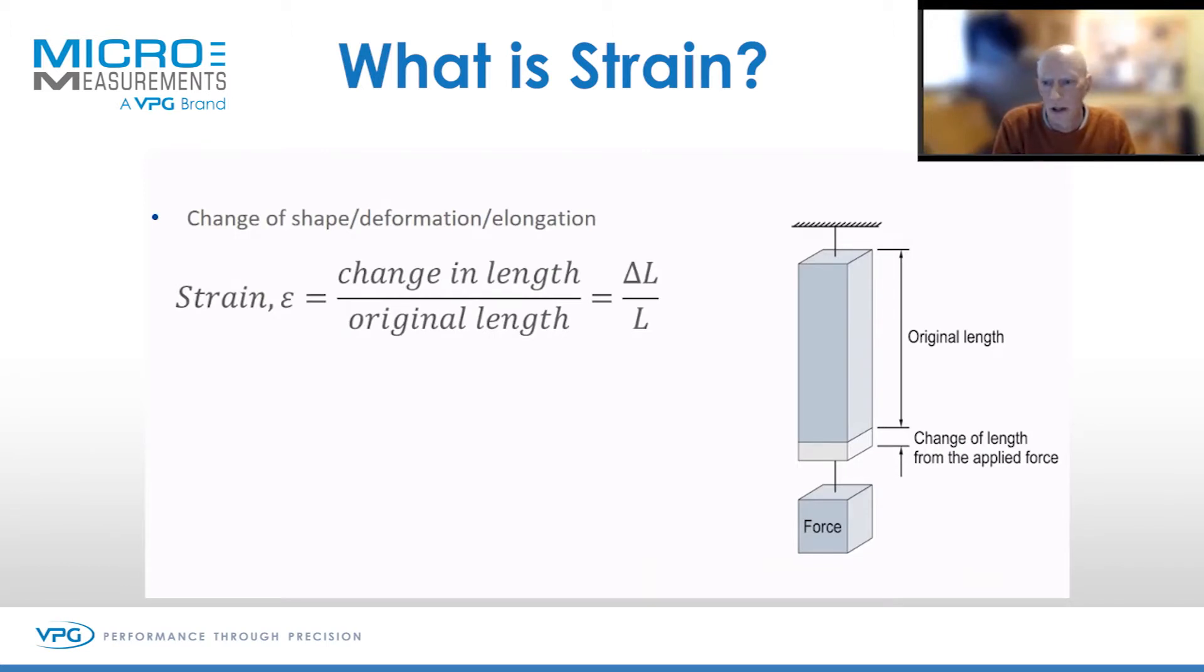Change of length over original length, represented by the symbol epsilon. If we had a 100 millimeter length and stretched this by a further 100 millimeters, we would have one strain.